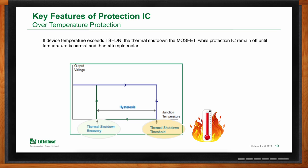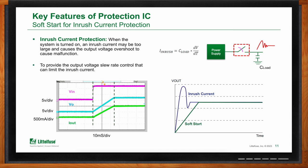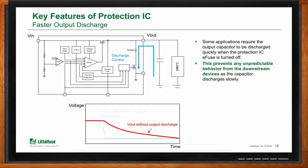Inrush current may be too large and may cause output voltage overshoot and end application malfunction. The protection IC can adjust the voltage slew rate to limit that inrush current, which is mainly caused by the input capacitance, by controlling how fast that voltage comes up. Another key feature is fast output discharge — some applications require the output capacitor to be discharged quickly. The protection IC incorporates a parallel MOSFET so that through a resistance, that capacitor can be discharged, preventing any unpredictable behavior of downstream devices.